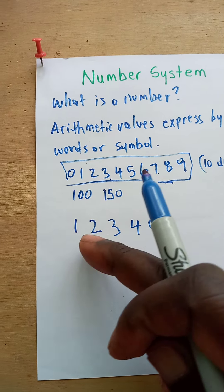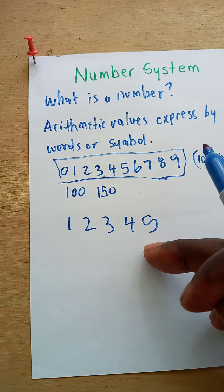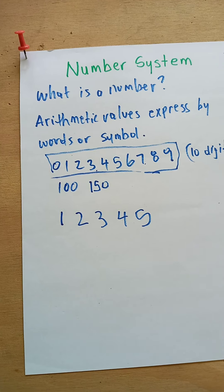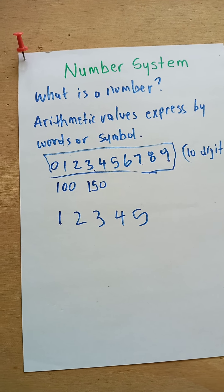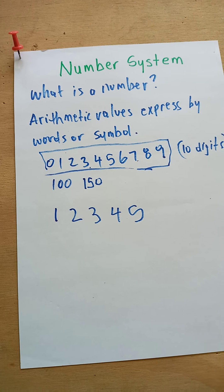You might not see one, two, three, four, or five — you will see different symbols.